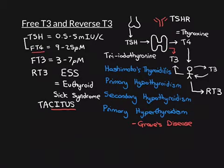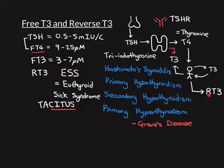However, often T4 is not converted into T3. Instead, a different iodine atom is removed and it becomes reverse T3. Reverse T3 is not capable of binding to a receptor, it does not have any signalling function, and therefore it's returned to the blood and is later removed gradually by the kidney.